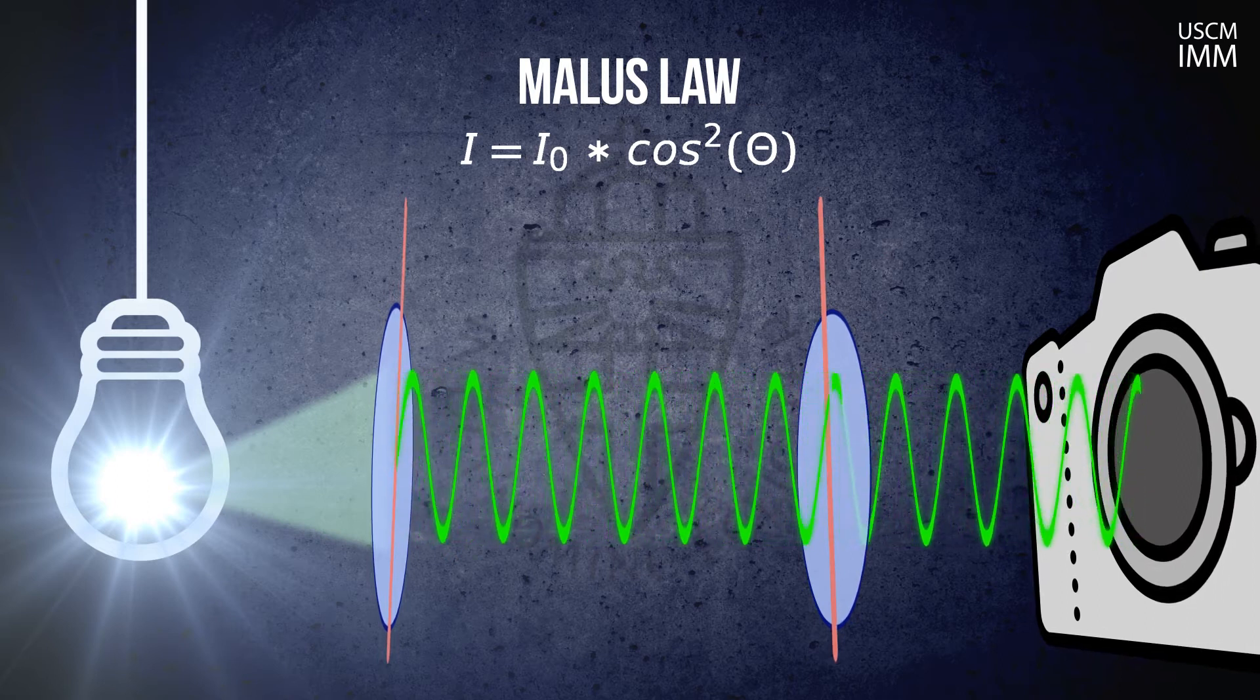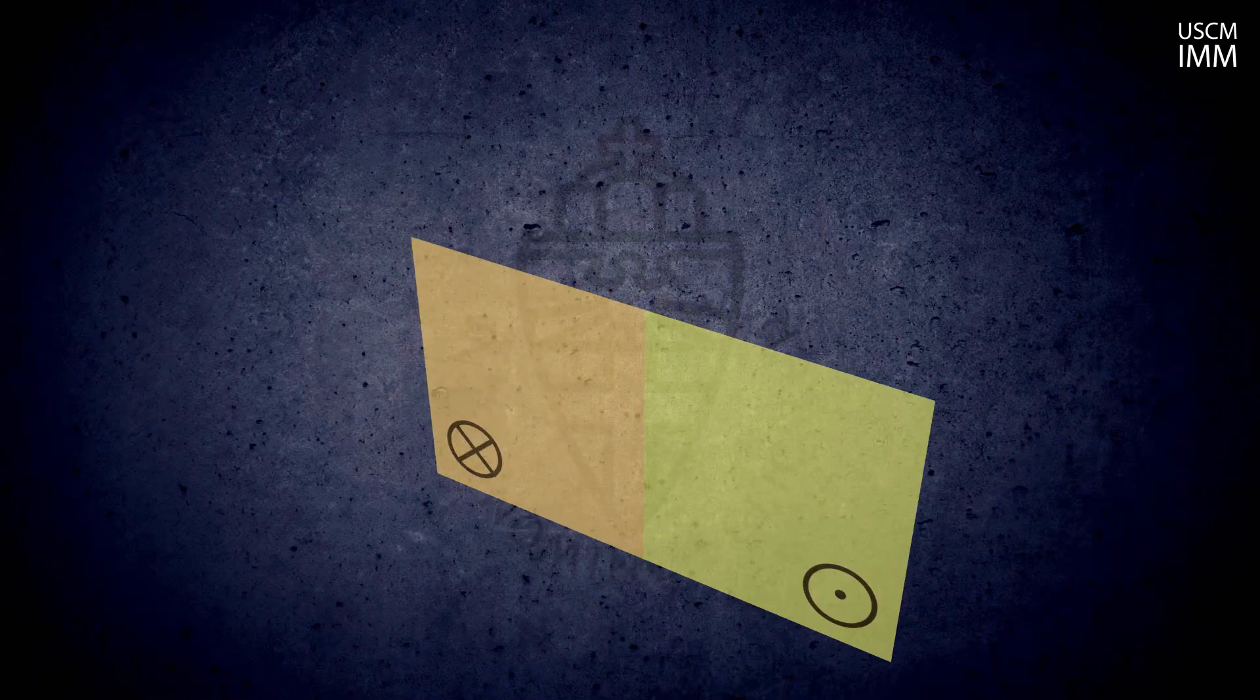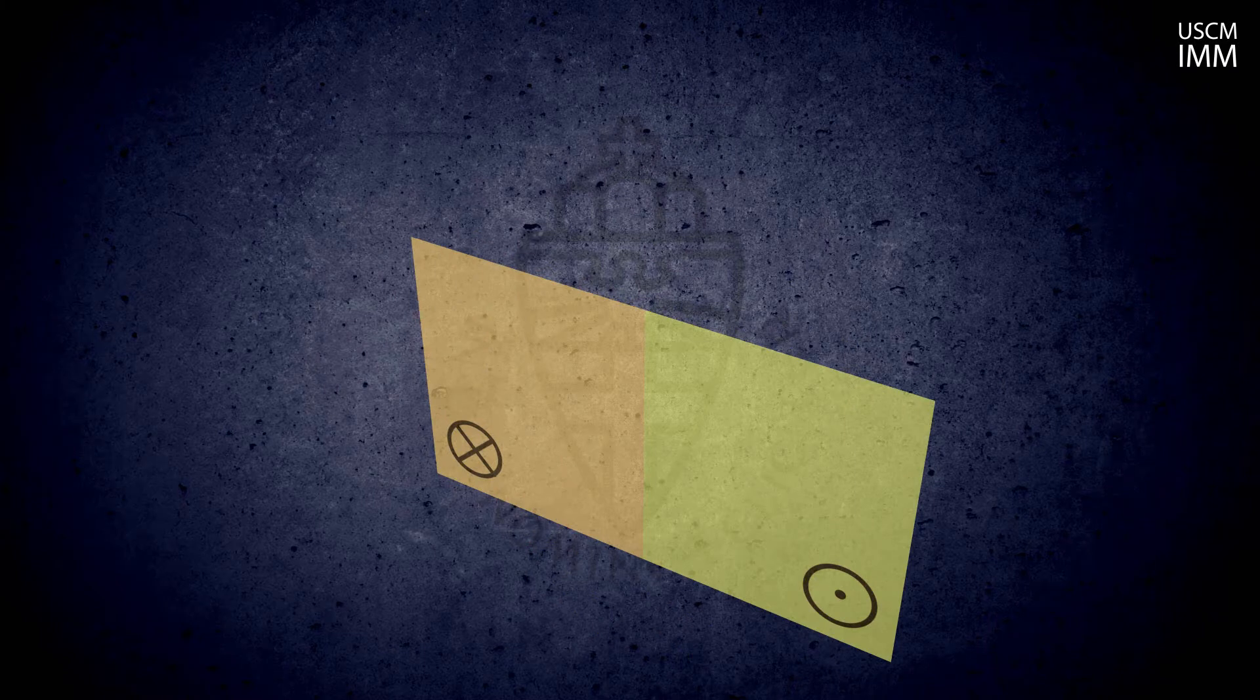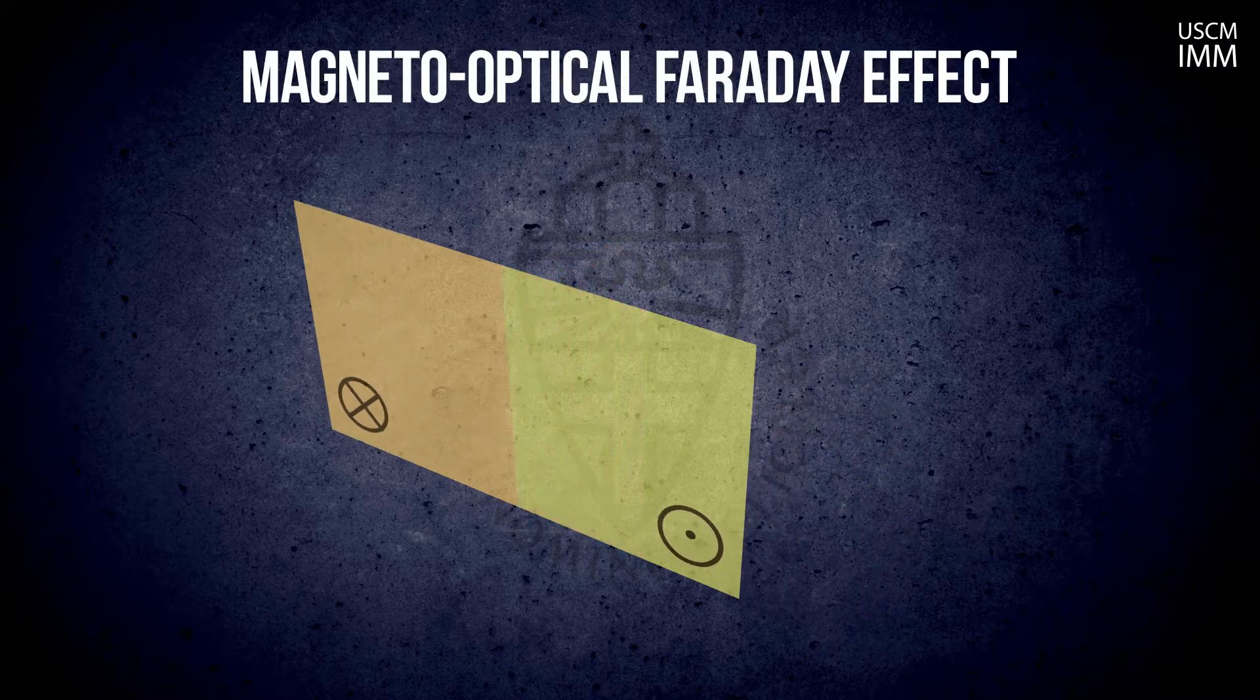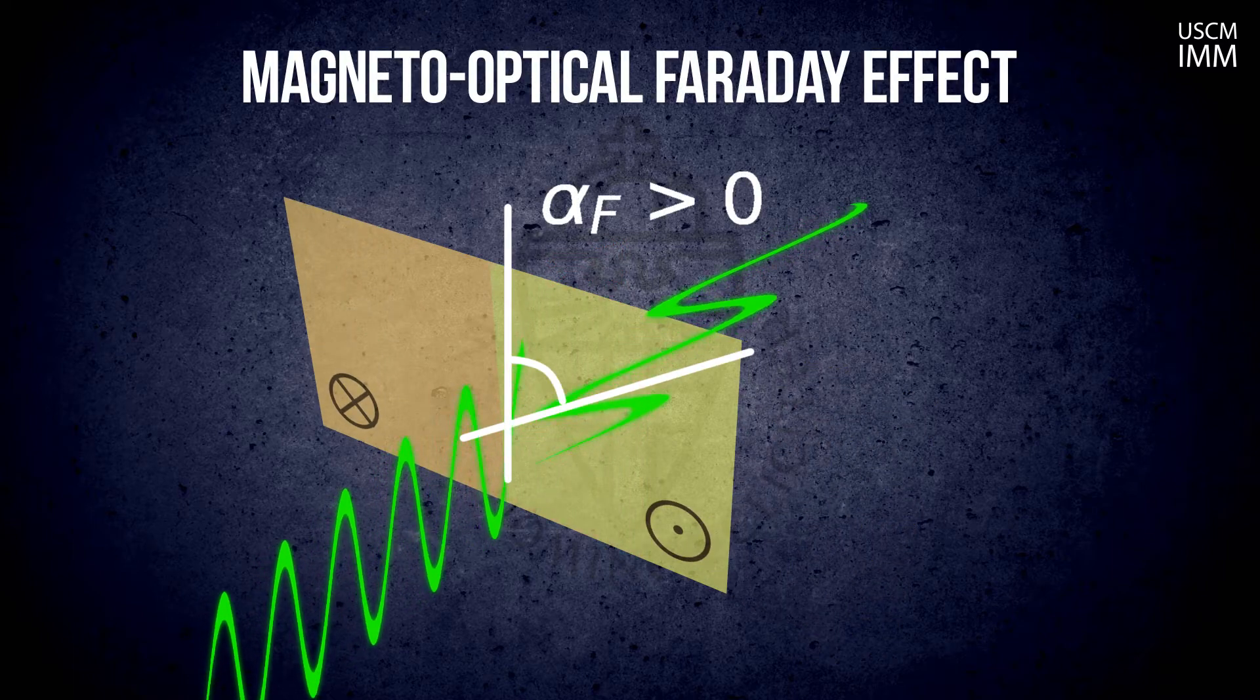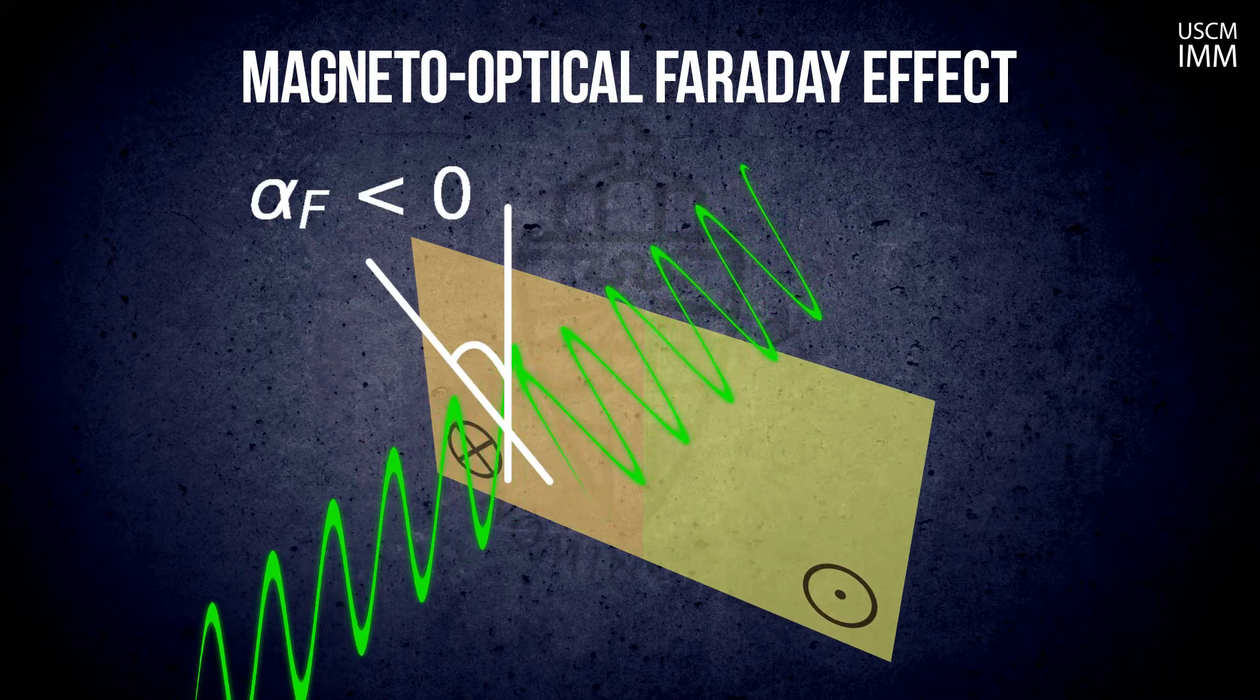Imagine that now between these two polarizers we put a magnetic field. The field consists of two magnetic domains. Half of the sample has the magnetization up and another half has the magnetization down. Due to the magneto-optical Faraday effect, up and down magnetic domains will rotate polarization of light over the angle alpha-f, clockwise and anti-clockwise respectively.